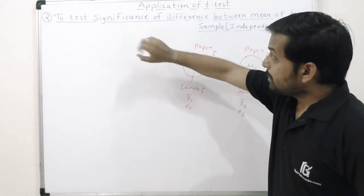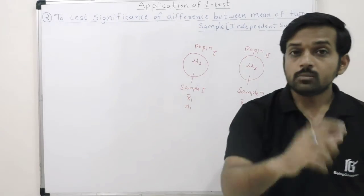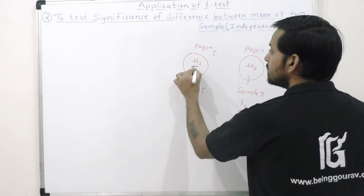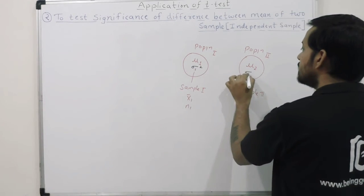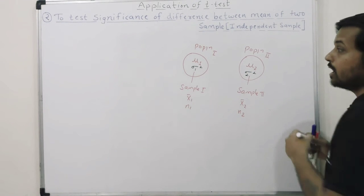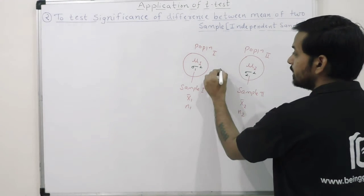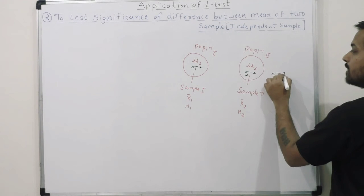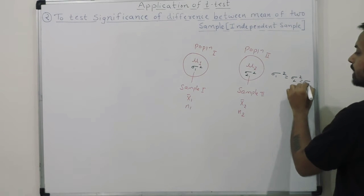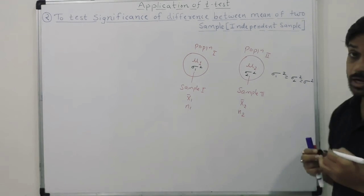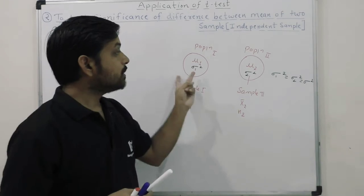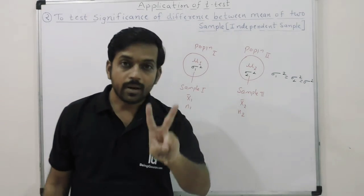In this application there is one extra assumption. The variance of both populations should be equal — that means sigma-one-squared should equal sigma-two-squared. This is a new assumption you should keep in mind when we talk about two independent samples.